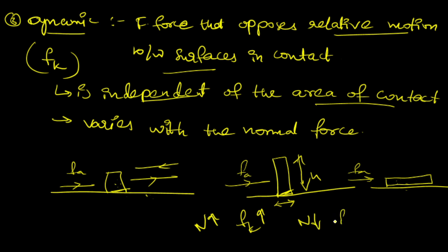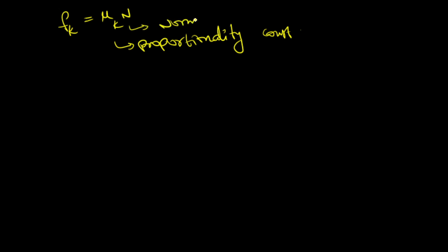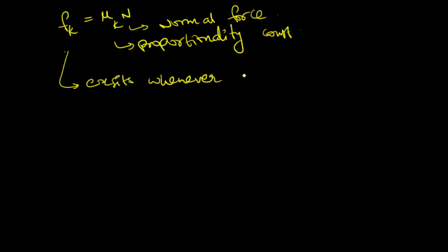As the normal force decreases, kinetic friction force decreases. The normal force is along the line drawn perpendicular to the surface. This kinetic friction is equal to μk × N, where μk is a proportionality constant and N is the normal force.